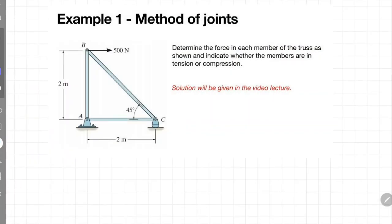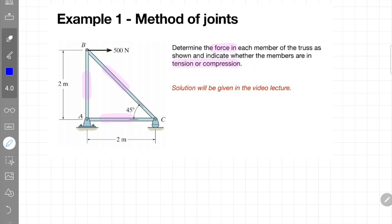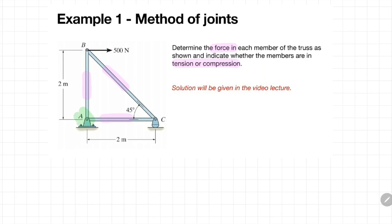In this example, you are required to find the forces in each member of the truss structure and determine whether each member is in tension or compression. The truss consists of three members: member AB, member AC, and member BC. These three members are interconnected through three joints: joint A, joint B, and joint C.